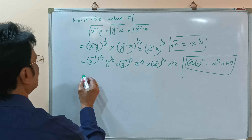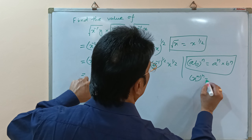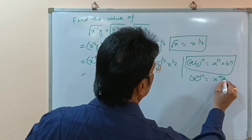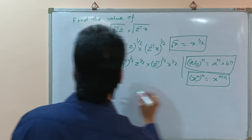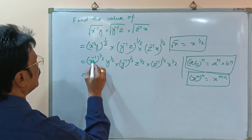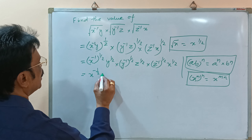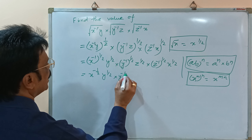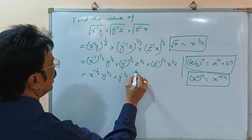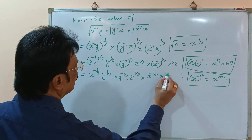So this is equal to: we know that x to the power m, whole to the power n, is equal to x to the power mn. According to this formula, we can write x to the power minus 1 into 1 by 2, which is minus half, and y to the power half, into y to the power minus half, into z to the power half, into z to the power minus half, into x to the power half.